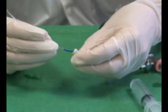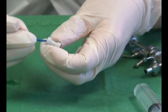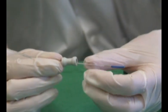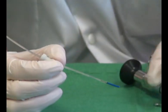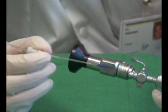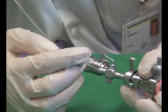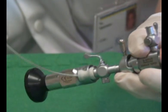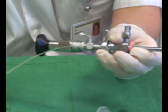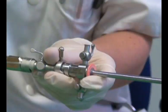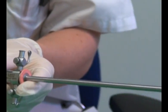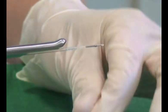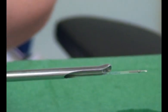The needle is passed first through the adapter, then through the working channel of the cystoscope. The adapter is then connected to the working channel to maintain water tightness. When the needle reaches the end of the scope, the cap is removed and the needle slightly retracted inside the sheath.